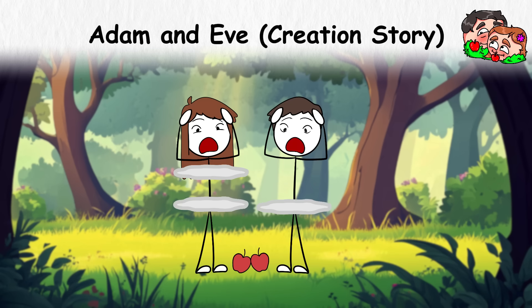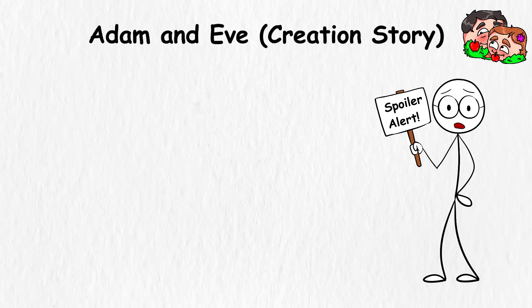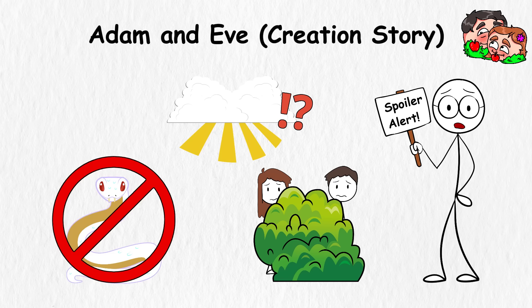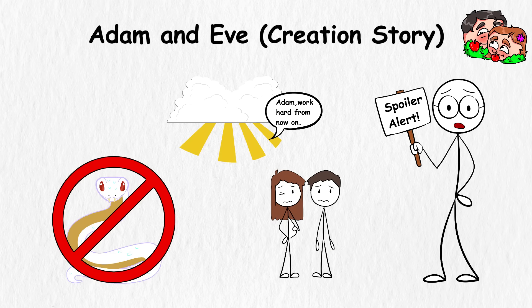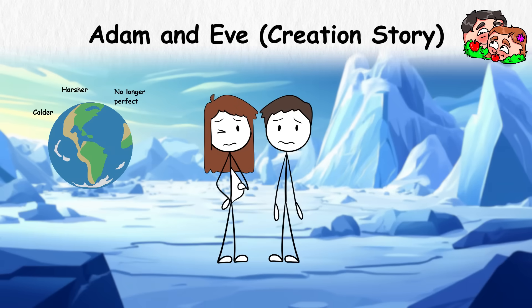Suddenly, they realize they're naked. Panic sets in, and they dive for the nearest leaves. Spoiler: fig leaves don't fix regret. God finds out, but there's no trial, just consequences. The snake is cursed, and Eve gets pain in childbirth. Adam is told he'll have to work hard just to survive. And both of them are sent out of the garden, into a world that's colder, harsher, and no longer perfect.